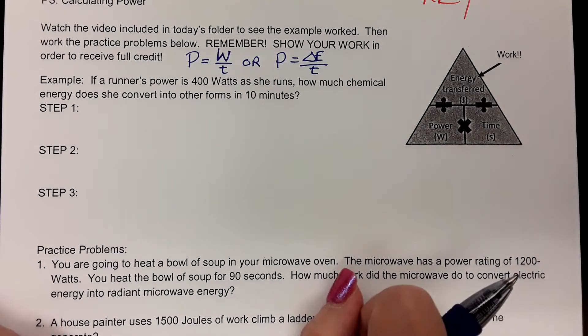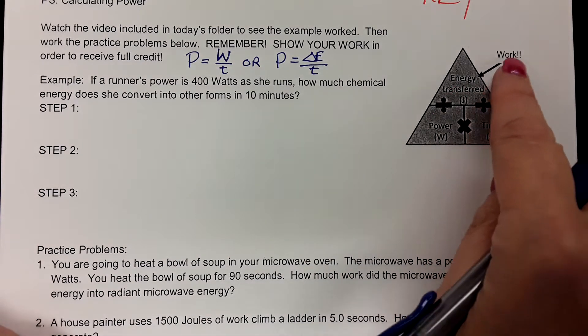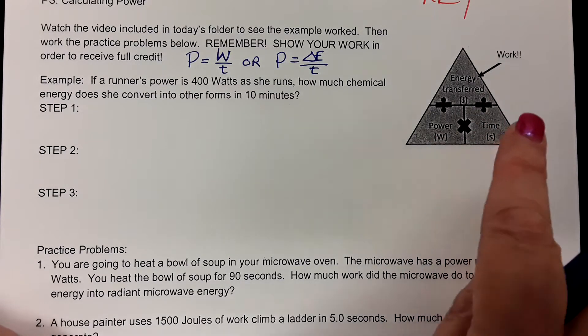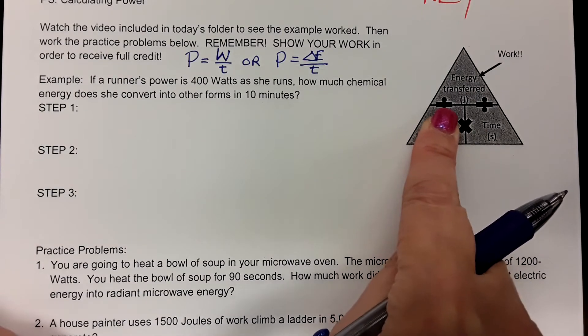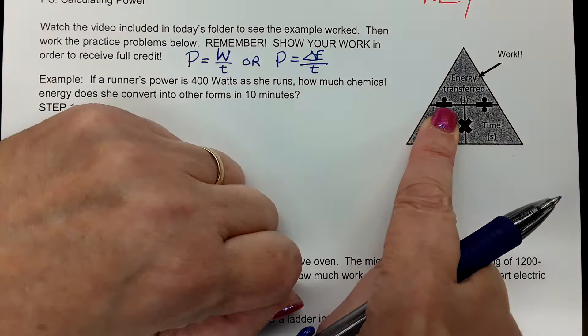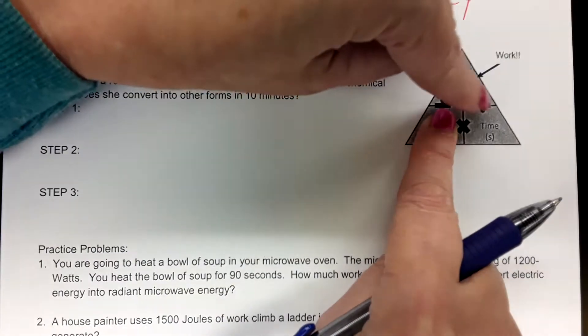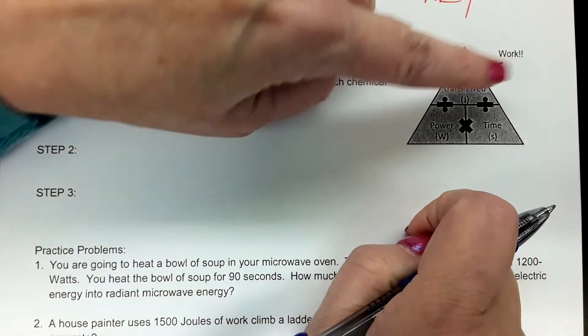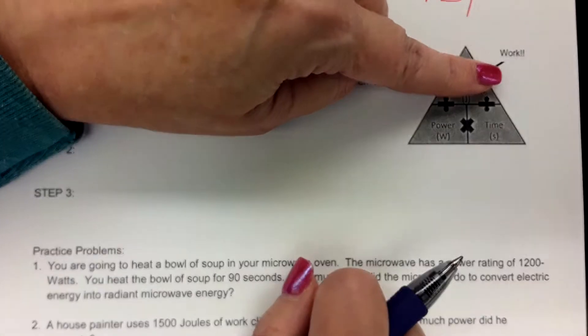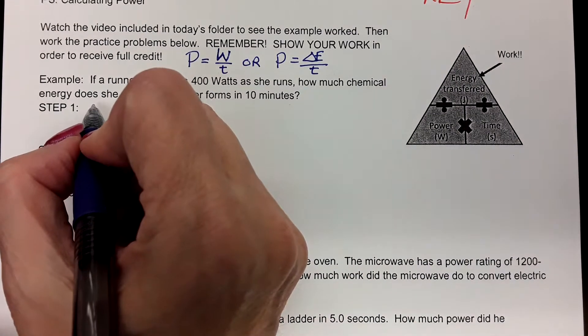Now, remember how the triangle works. Whether you're looking for the energy transferred, which is the work, or the power or the time, you cover the one you're looking for up with your finger and that will show you what you're going to do with the other two. For example, if you want the power, that's going to be the energy divided by the time. If you want the energy transferred or the work done, you say power times time. Get it? It's pretty easy, isn't it?